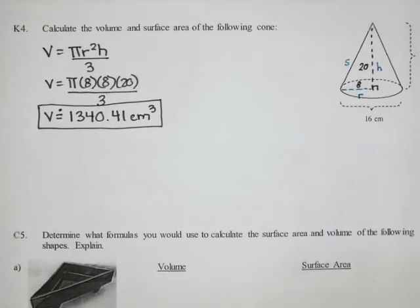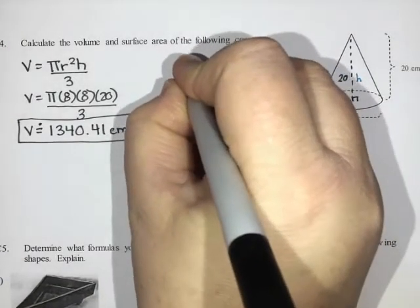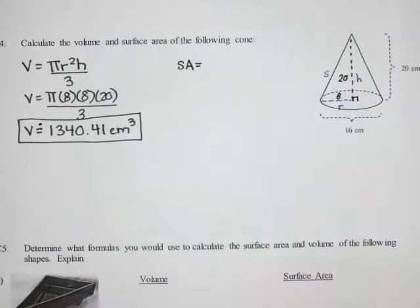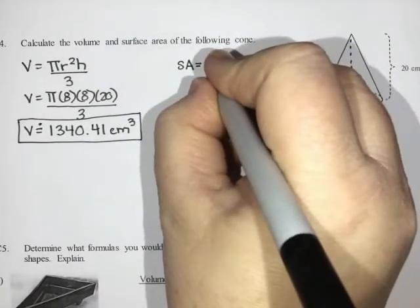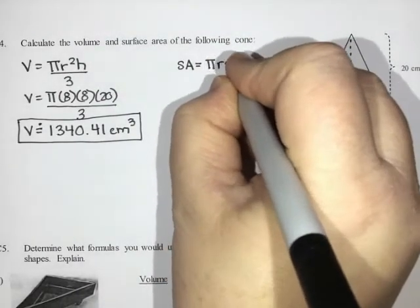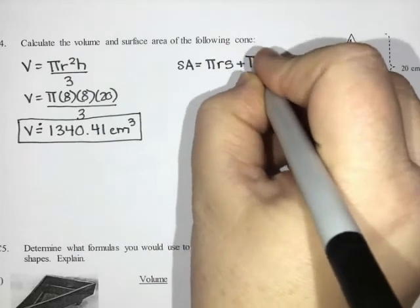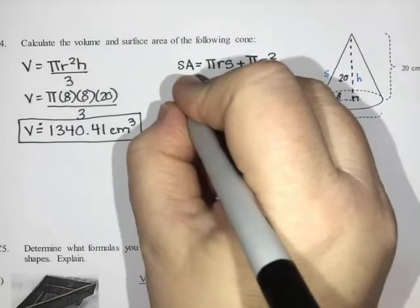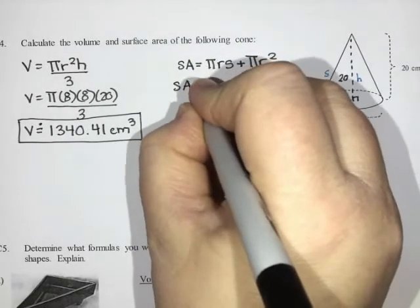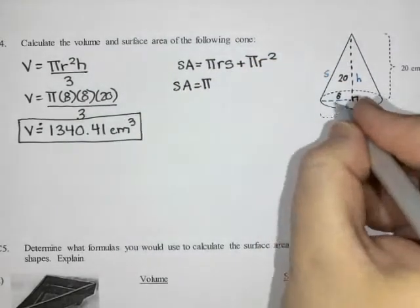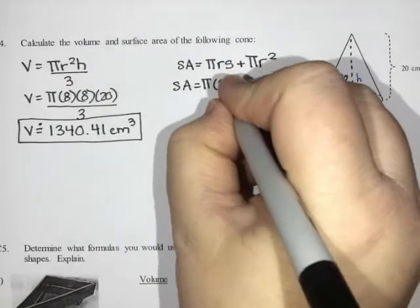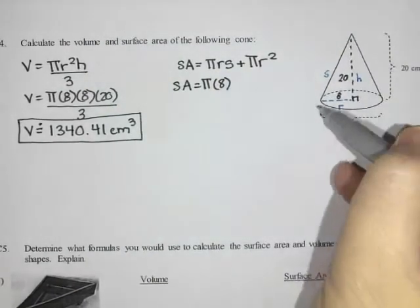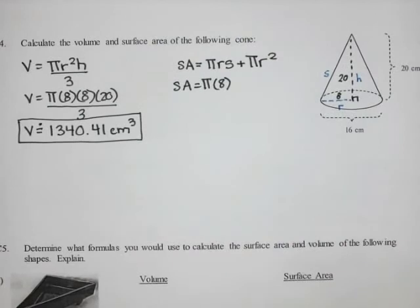For the surface area, the surface area of a cone is pi R S plus pi R squared. Pi, I'm going to use my pi button, R is still eight. But S is the slant, and I don't currently know what the slant is.